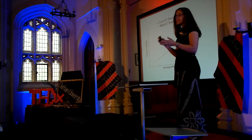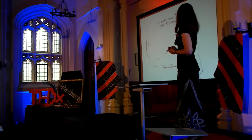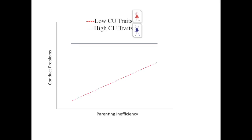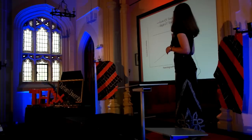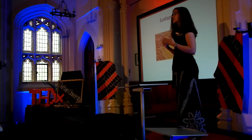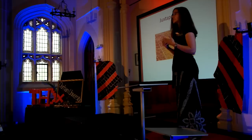You can see more effectively here: as parenting inefficiency goes up, conduct problem behaviors go up — for your low callous and unemotional child. For the high callous and unemotional child, they're high regardless of what their parenting is like. Now, this is one time point I should point out. But what this would suggest is that perhaps children with callous and unemotional traits don't change their spots based on their environment.